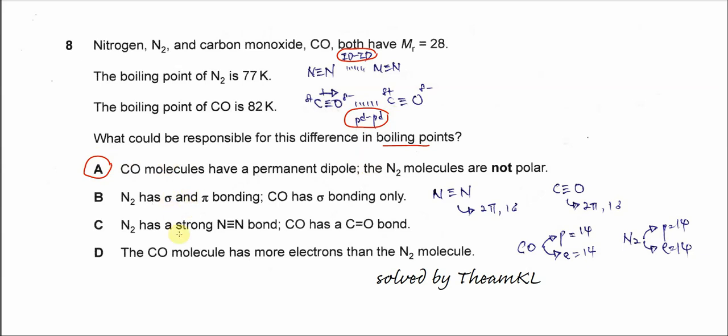Let's discuss B, C, and D—why they're not the answer. Option B: nitrogen has a sigma and pi bond, and carbon monoxide has sigma bonds only. This statement is wrong because carbon monoxide actually has three bonds. Nitrogen's triple bond has two pi and one sigma, and carbon monoxide also has two pi and one sigma.